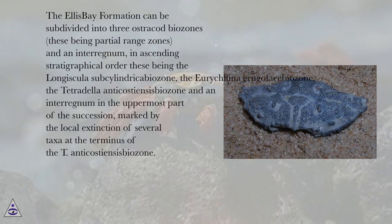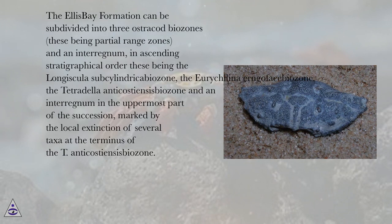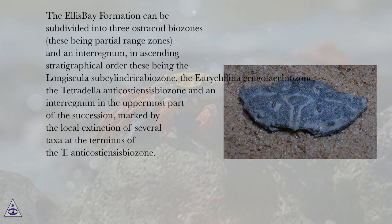The Ellis Bay Formation can be subdivided into three ostracod biozones, these being partial range zones and an interregnum. In ascending stratigraphical order, these are the Longiscula subcylinder cabiozone, the Uriculina erugaface biozone, the Tetradella anticostian cispiozone, and an interregnum in the uppermost part of the succession, marked by the local extinction of several taxa at the terminus of the T. anticostian cispiozone.